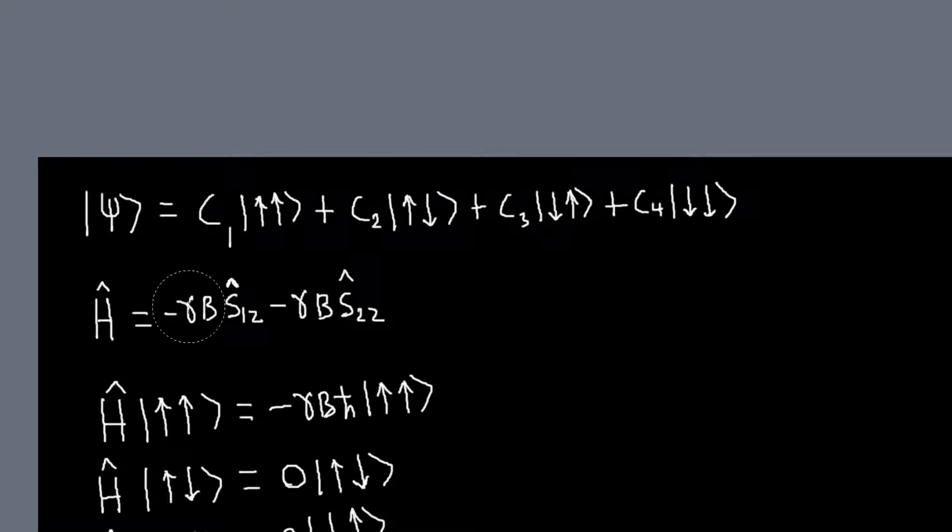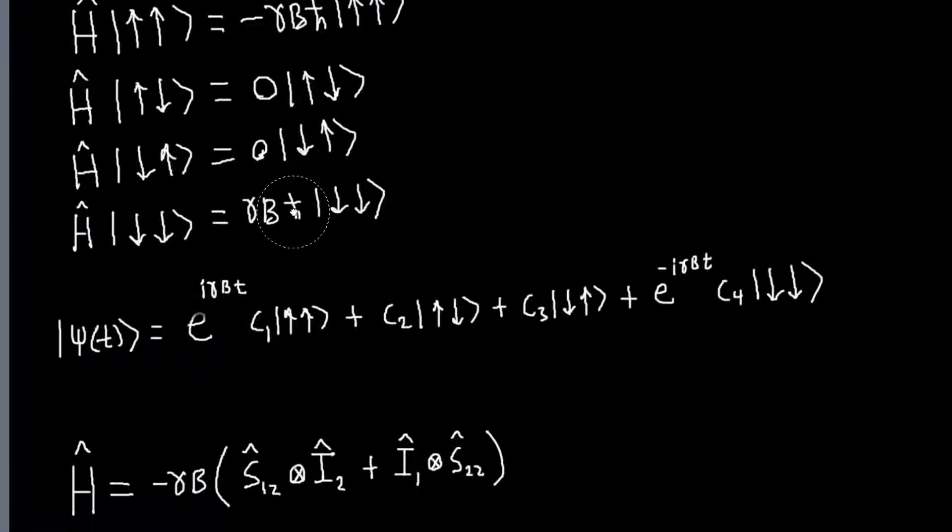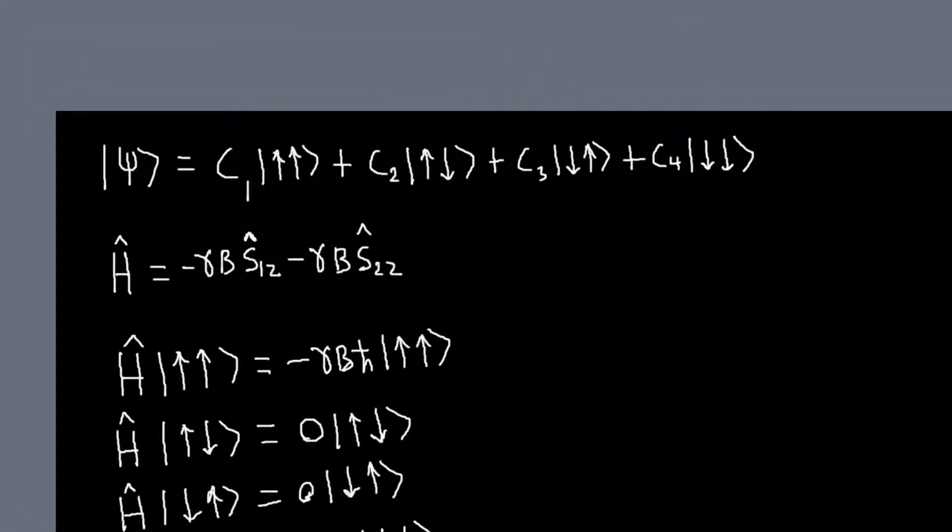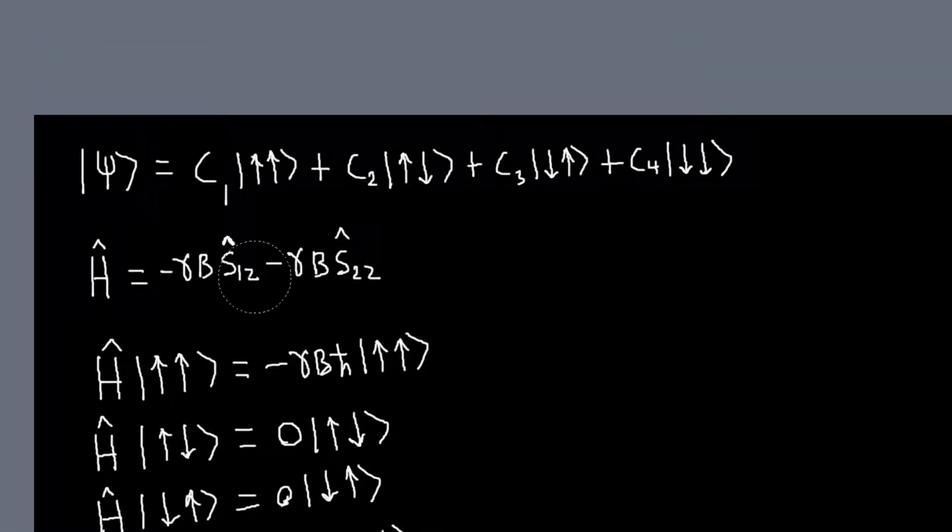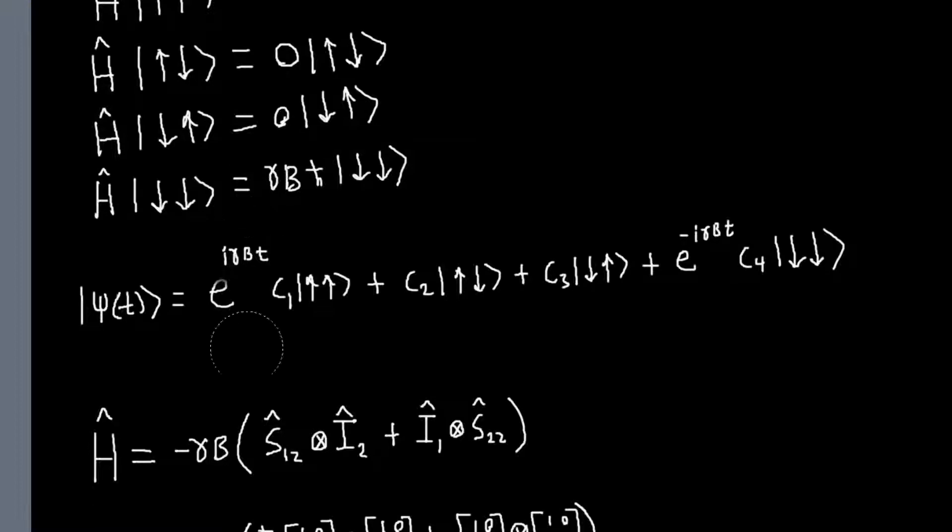Because all I've written here is that my S1Z is a two-by-two matrix, and so is S2Z, and I have one minus the other one. So, how do I get a four-by-four matrix out of this? Well, this is why, last time, I talked about the Kronecker product stuff. So, when I write this down, really what I mean is this.